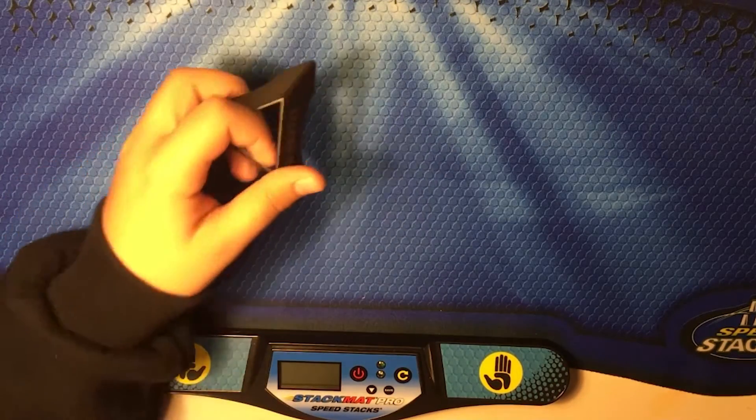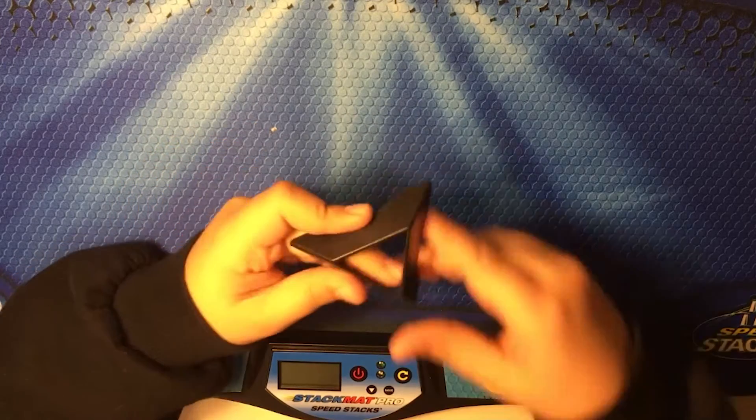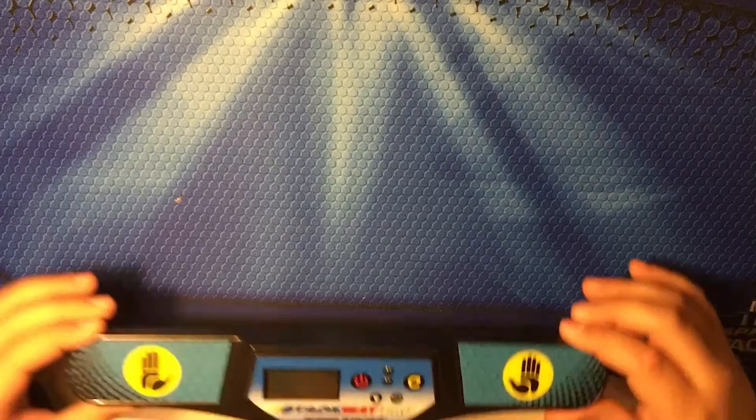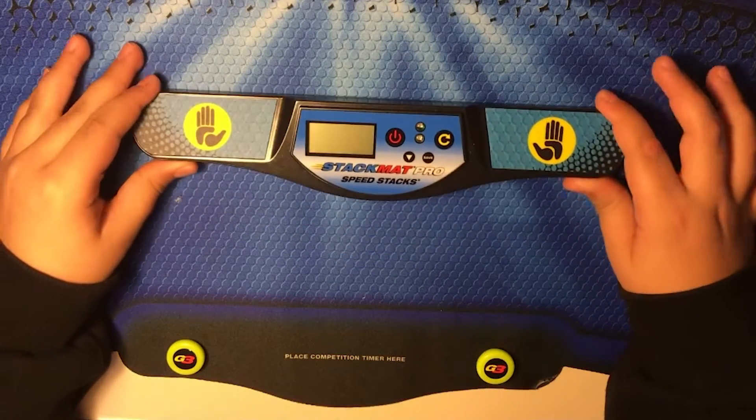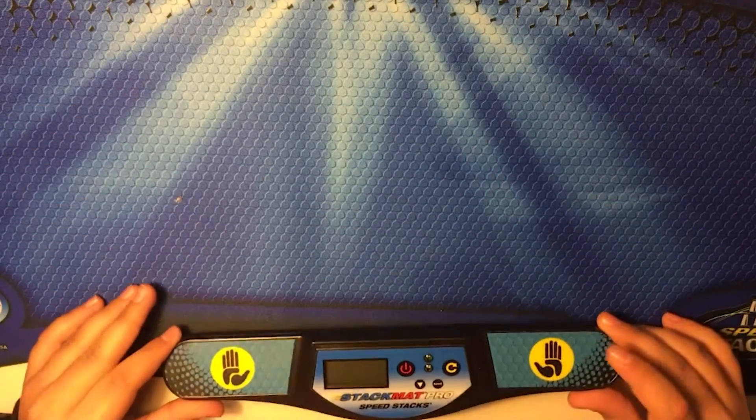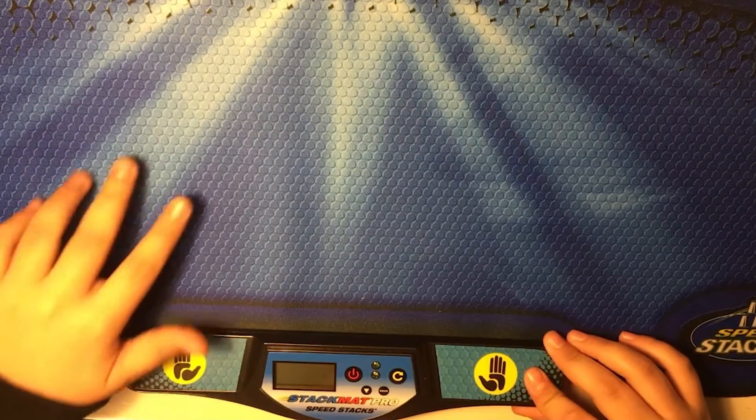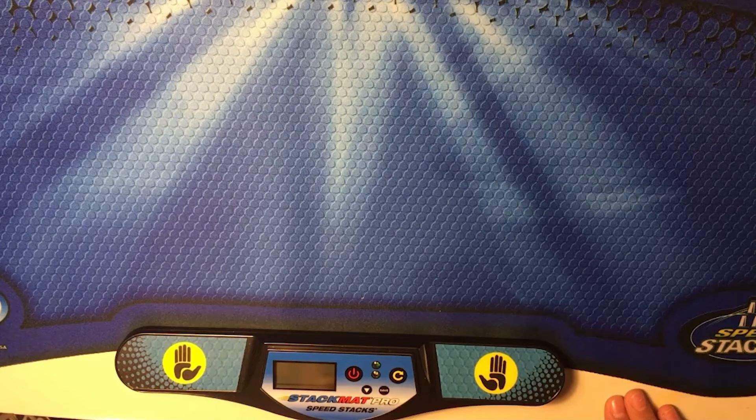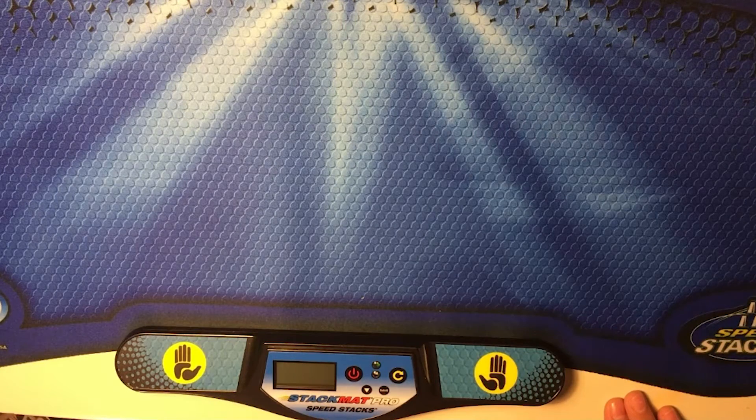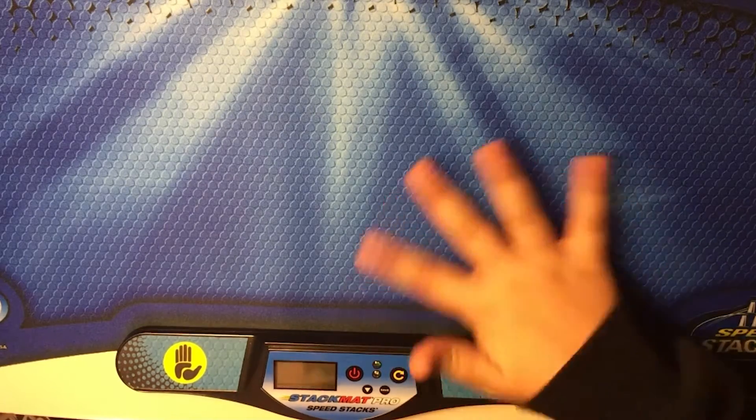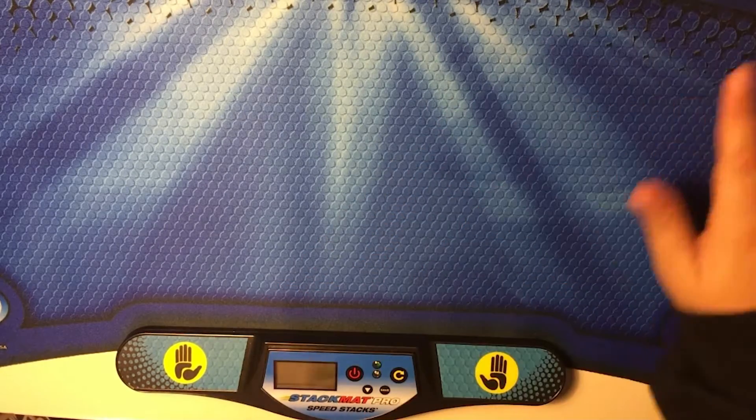I have these stands that came with the carbon fiber set, the D-Fantix ones. And I also have this, it's the Stackmat timer Gen 3. I got it at the toy store for like $40. It was good. I got it a couple weeks back.